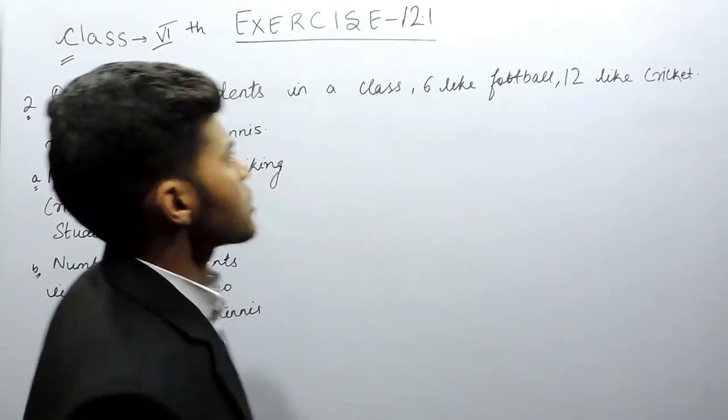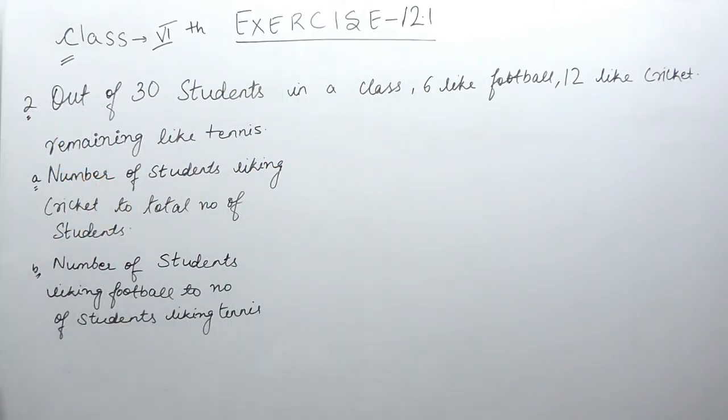Hello everyone, this is the second question of exercise 12.1 of class 6. The question says that out of 30 students in a class, 6 like football, 12 like cricket, and the remaining like tennis.